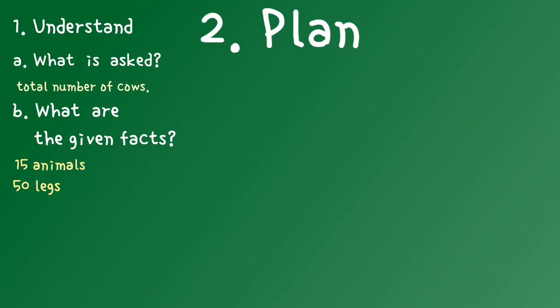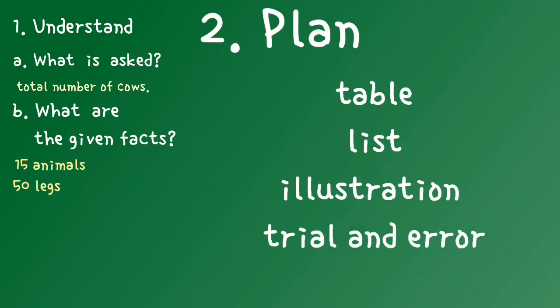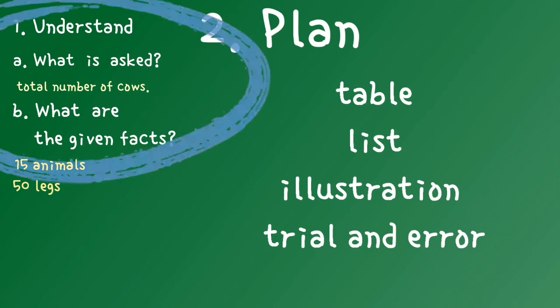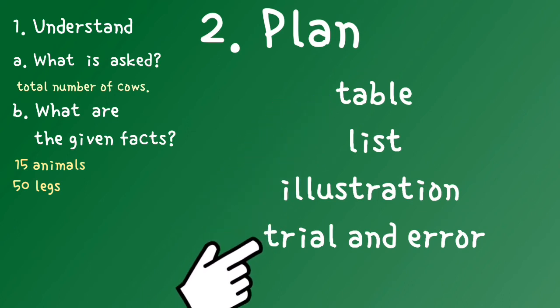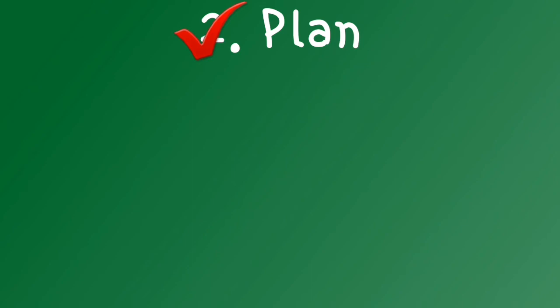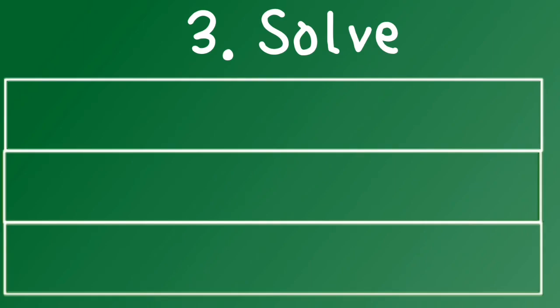Then plan. There are many strategies to solve a non-routine problem. You can make a table, a list, an illustration, or do trial and error strategy, and many more. You have to plan which strategy is best based on how you understand the problem. In this problem, I will make a table and do trial and error strategy. Let's proceed to step 3. Here's the table: number of chickens here, number of cows here, and total number of legs here.